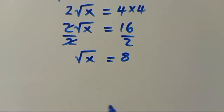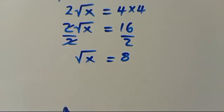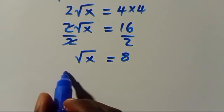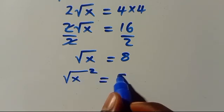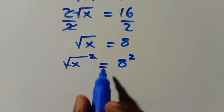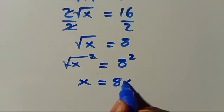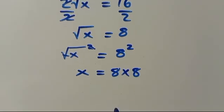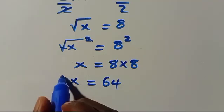To eliminate the square root of x, we square both sides again. So (√x)² = 8², which cancels the root and gives x = 8 times 8 = 64. That is the result from method one.